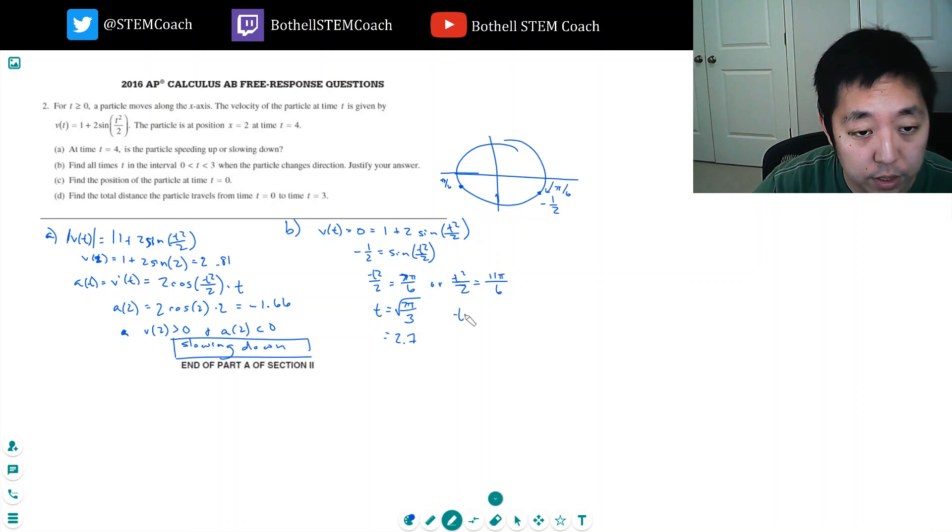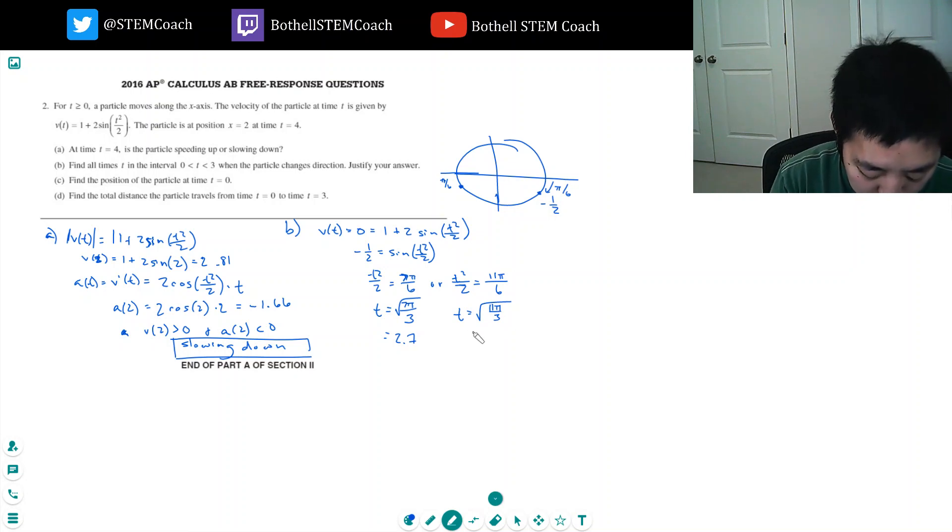How about here? t is equal to the square root of 11 pi over 3. The 3 is because I multiplied by the 2. Square root of 11 pi divided by 3. That's equal to 3.39.